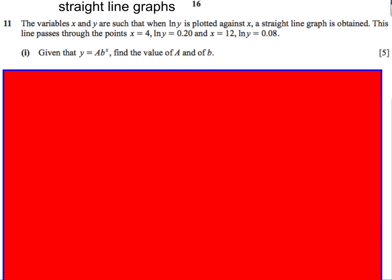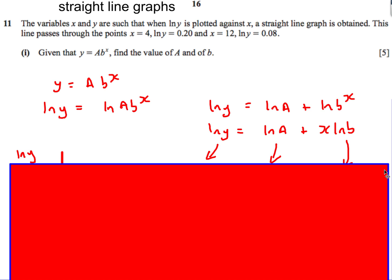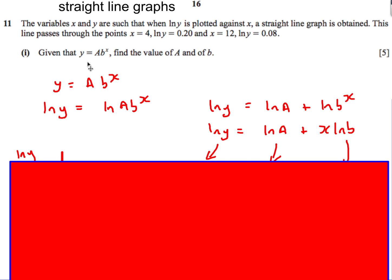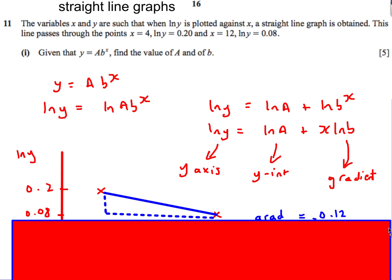Here's the first question. It gives us variables x and y, a couple of points, and says that y equals a times b to the power x — find the values of a and b. The easiest way is to rearrange using the laws of logs. Taking ln of both sides: ln y equals ln(ab^x), which becomes ln a plus ln(b^x), and then using the laws of logs the x can be brought down to give ln y equals ln a plus x ln b.